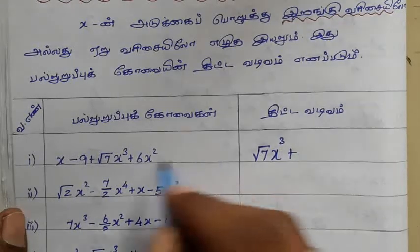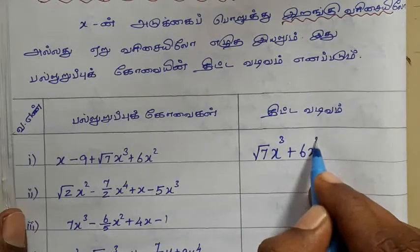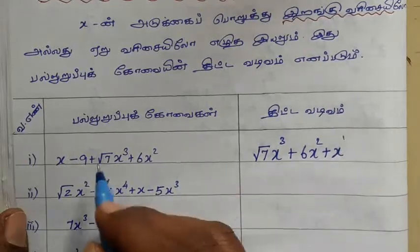x power 3, then x power 2, then x power 1, arranging by descending powers.